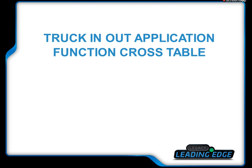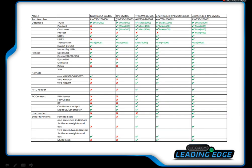This is called the truck-in, truck-out application function cross-table. You can find the part number and then look up which functions are available in that application. For example, the first one — truck-in, truck-out 405 — only allows one database, the truck database, and has a transaction database that can be exported by USB. The unattended TPC application, XAM615, has four databases and more functions than the 405.